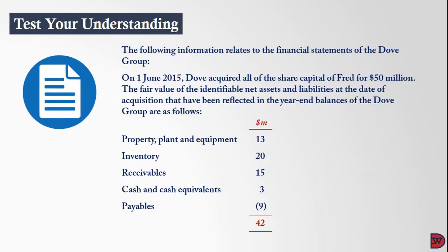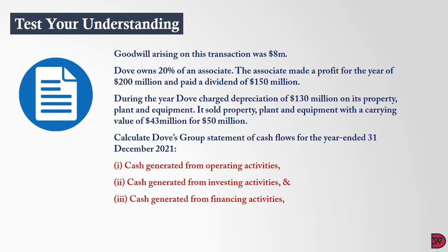Additional information: on 1st June 2015, DAF acquired all the share capital of Fred for 50 million dollars. The fair value of identifiable net assets and liabilities at the date of acquisition, reflected in the year-end balances, are as follows: property, plant and equipment 13 million, inventory 20 million, receivables 15 million, cash and cash equivalents 3 million, payables 9 million, giving net assets of 42 million dollars. Goodwill arising on this transaction was 8 million dollars.